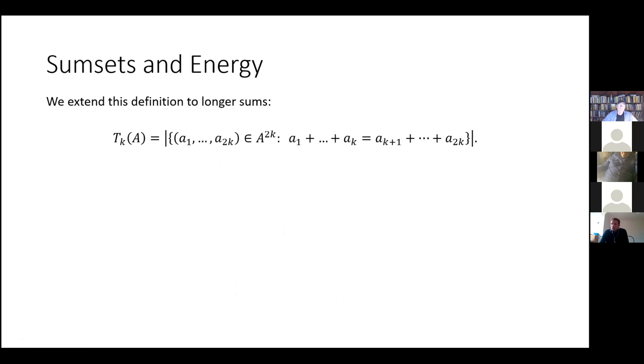We then generalize this to longer sums. So this TkA is going to be the same as the T2 energy, but we're going to have K terms on each side of the equation. And again, they're still all elements of our set A. And we also got similar upper and lower bounds on the size of the K-fold energy. The lower bound, again, comes from these diagonal solutions where we just set the right-hand side to be equal to the left-hand side. And the upper bound comes from noticing that once K minus one term, two K minus one terms have been fixed, the last term is automatically determined.